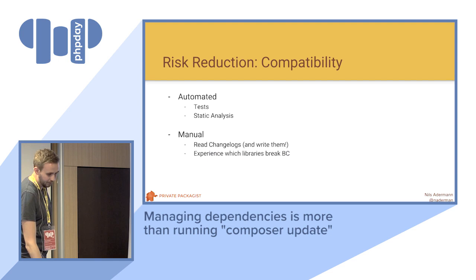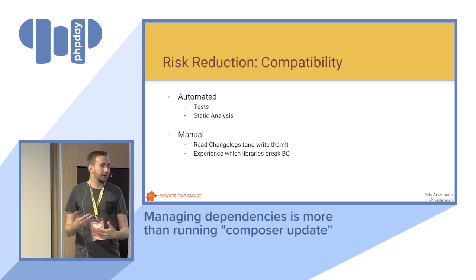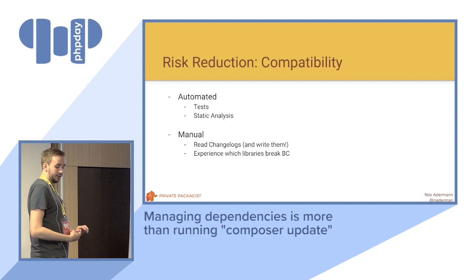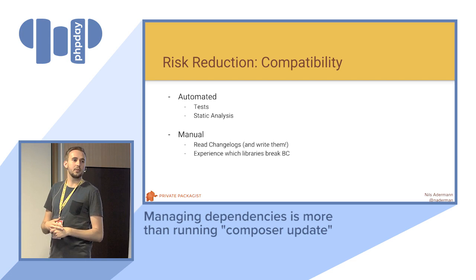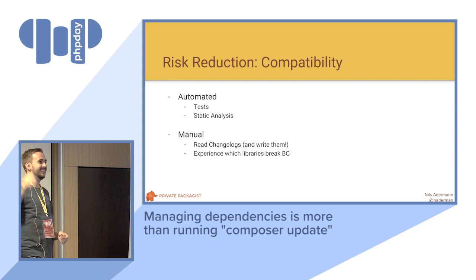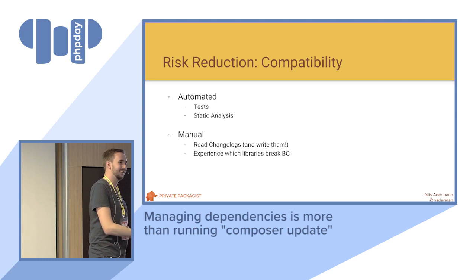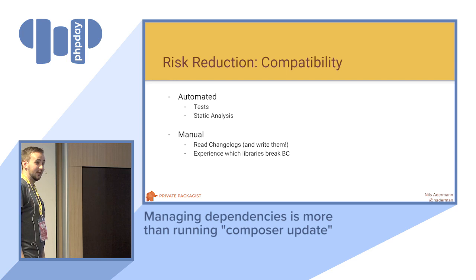Further things you can do to reduce the risk of compatibility breaks are kind of obvious — if you have automated tests, you can run automated testing against new versions. You can do things like static analysis to find issues where it's calling some function that doesn't exist anymore. There are manual things like reading changelogs. Who here actually reads all the changelogs of all the dependencies when they run an update? And also write them — if you're maintaining some library that people use, actually write a changelog because otherwise they have no chance of finding out what changed. It's kind of give and take.